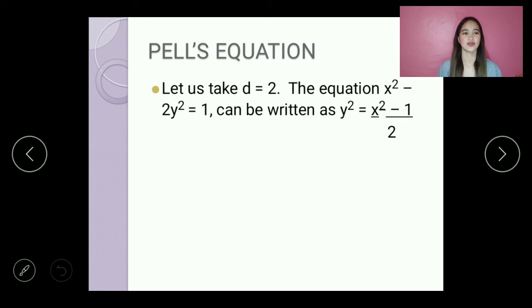Trying x equals 1, it gives, of course, the trivial solution. So trying x equals 3, we get, substitute the value: 3 raised to 2 minus 1 all over 2 is equal to 4, or is equal to 2 raised to 2. So 3 and 2 is a non-trivial solution.